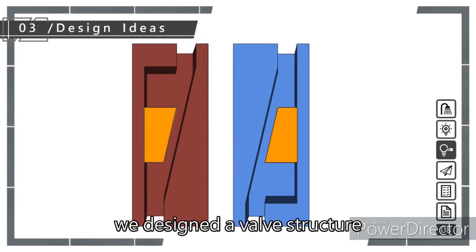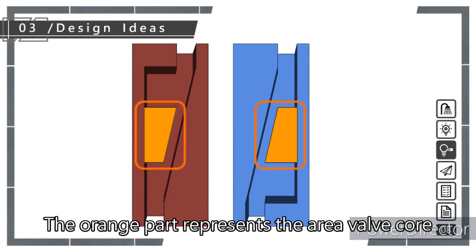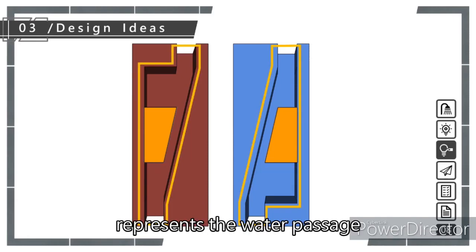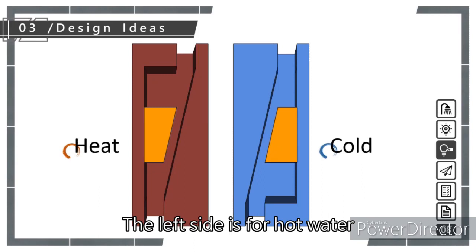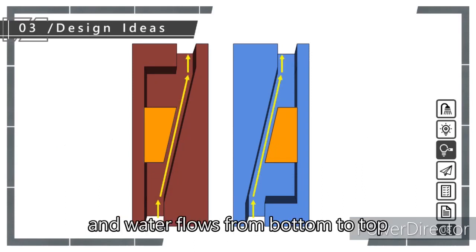Based on this principle, we designed a valve structure. The orange part represents the valve core, and the yellow grooved part represents the water passage. The left side is for hot water, the right side for cold water, and water flows from bottom to top.